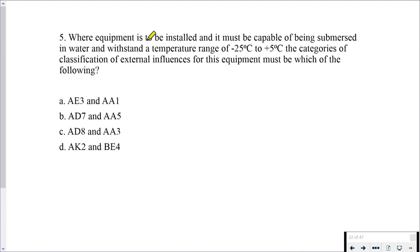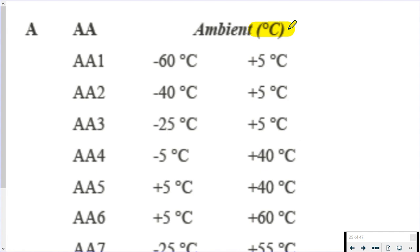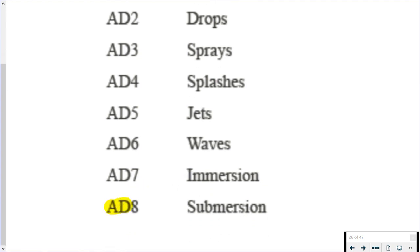Question 5: where equipment has to be installed and it must be capable of being submersed in water with a standard temperature range of -25 degrees to +5 degrees C, the categories of classification of external influence for this equipment must be which of the following? We've got a list of external influence codes. We're looking for external influences. We find that in Appendix 5. When we're in Appendix 5, we're looking for water and temperature ranges. There's the temperature range and the fact that for water, the equipment is submersed. So Appendix 5, we've got this big concise list. First thing on the concise list is that ambient temperature AA. So AA3 has that -25 to +5 degrees C. And if we look further down to water and we scroll down through water, you'll see that AD8 has submersion.